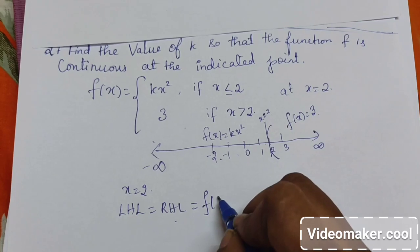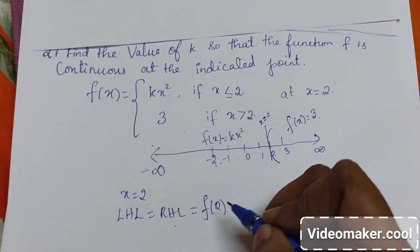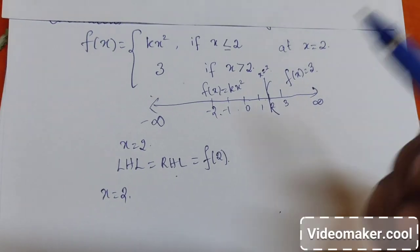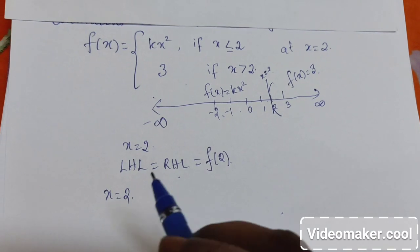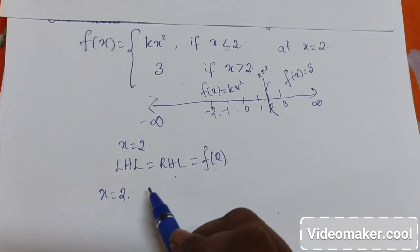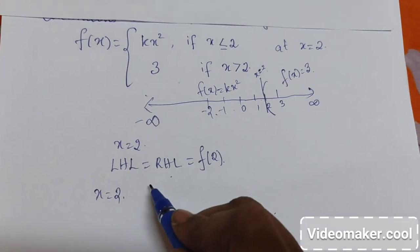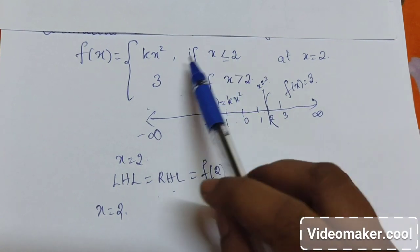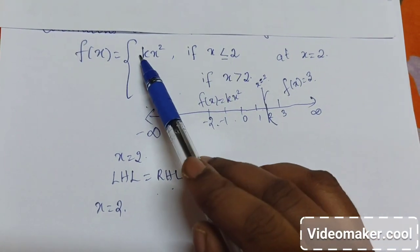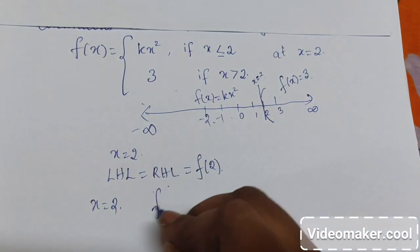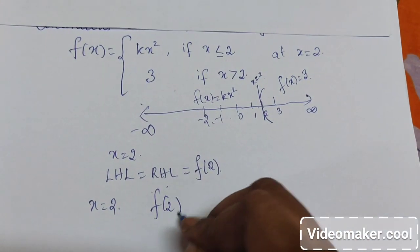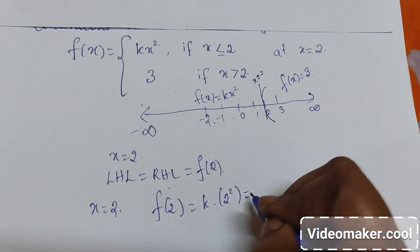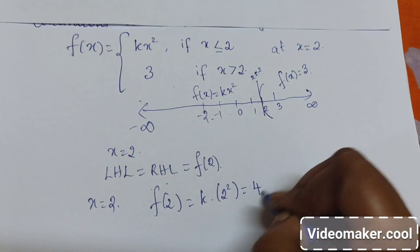So we will calculate the functional value at 2. When x equal to 2, the function will be kx squared. So f(2) is equal to k into 2 squared, which is 4k.